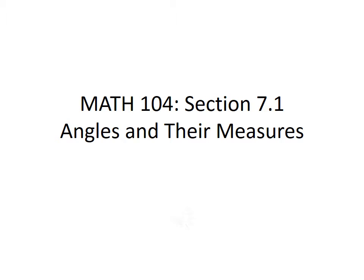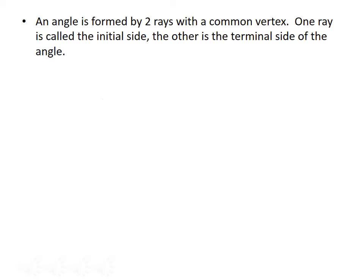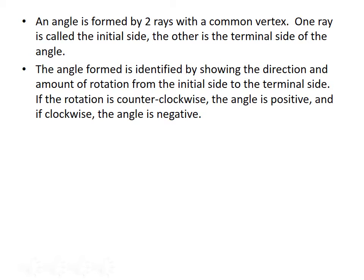In this lecture, we're going to talk about angles and their measures. An angle is formed by two rays with a common vertex. One ray is called the initial side — that's where we start from — and the other ray is called the terminal side of the angle. The angle formed by the two rays is identified by showing the direction and amount of rotation from the initial side to the terminal side.